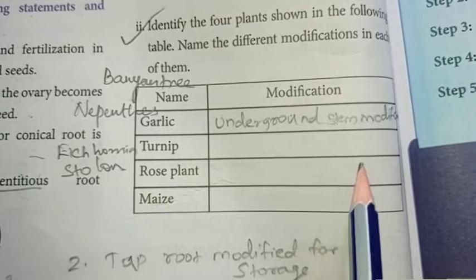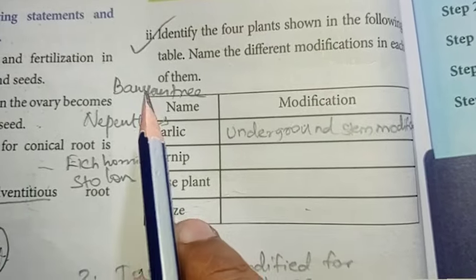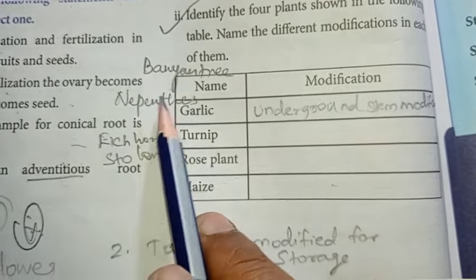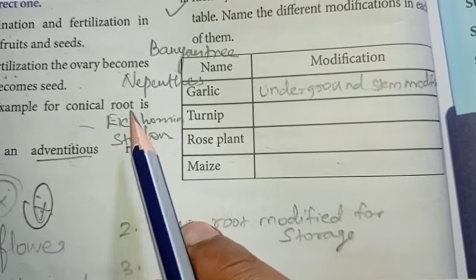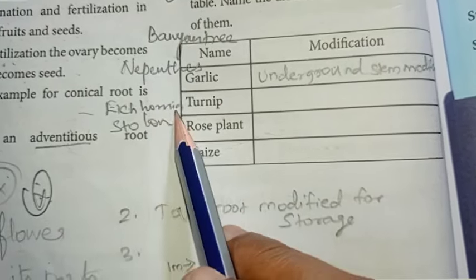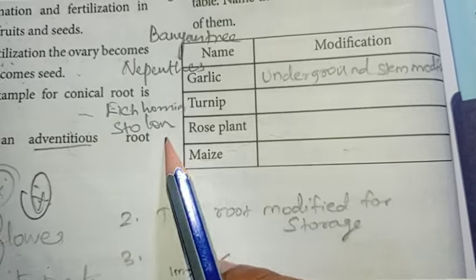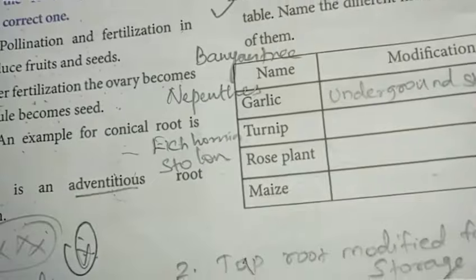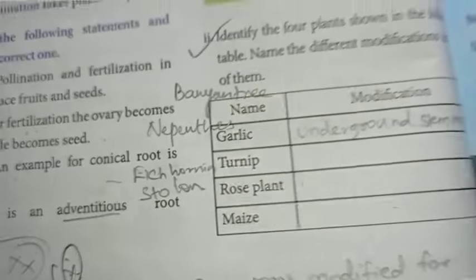What are the modifications of a plant? Examples you can give here: Banyan tree, Nepenthes, Begonia, and stolon.